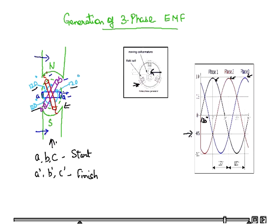As seen here, A-A', this is the coil. The EMF induced in the coil A-A' is zero and is increasing in the positive direction as shown by V A-A'.